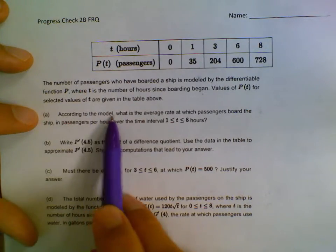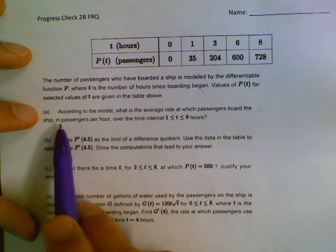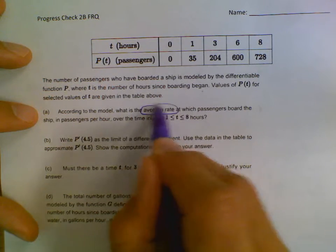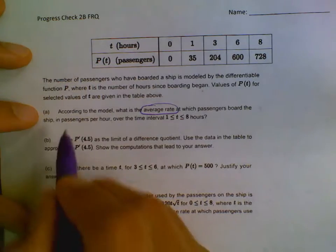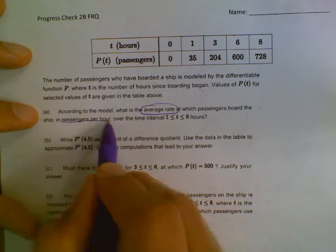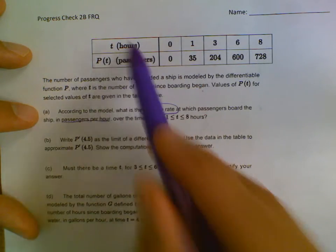Now, according to the model, what's the average rate at which passengers board the ship? So if it says average rate, basically that's just talking about average rate of change. And it says passengers per hour, so that means we should be doing the P values divided by the time values.